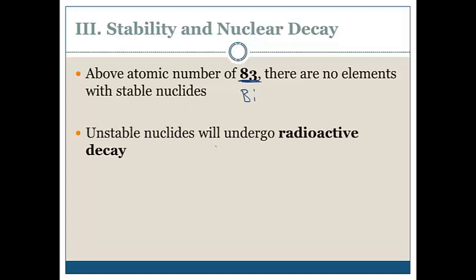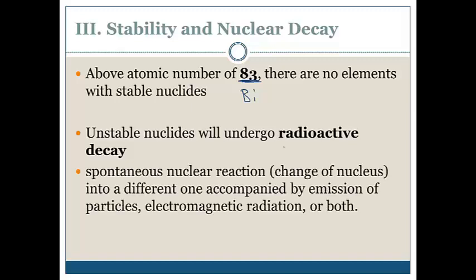If it's unstable, the substance will undergo radioactive decay. What is radioactive decay? It's basically a change in the nucleus. Why is it doing that? Because it's unstable, it wants to become stable. Spontaneous nuclear action in which a nucleus changes into a different one, accompanied by emission of particles, electromagnetic radiation, or both. What makes radioactivity so dangerous? It's usually these particles or electromagnetic radiation. This process is also known as transmutation, the process of a nucleus changing.